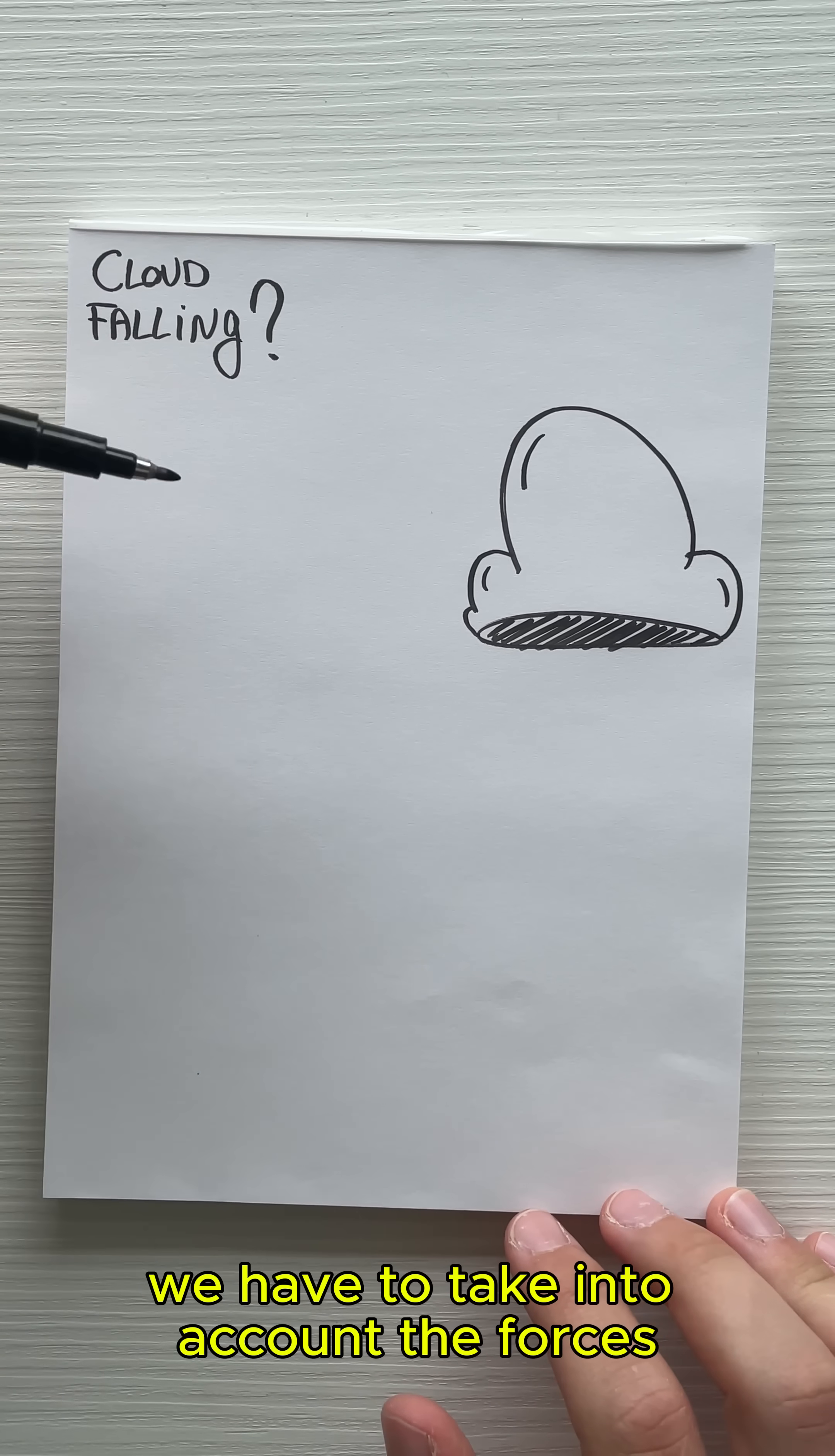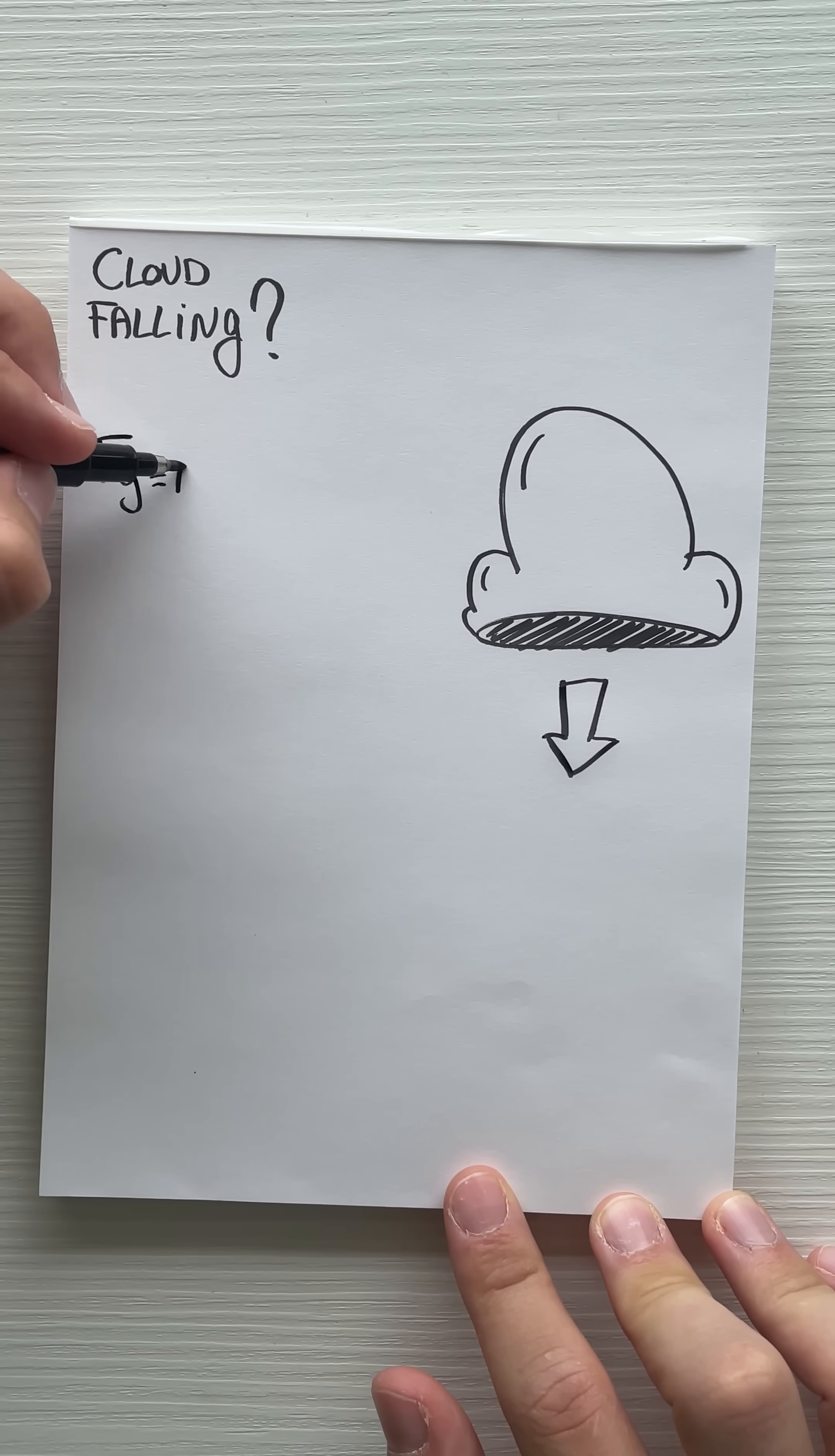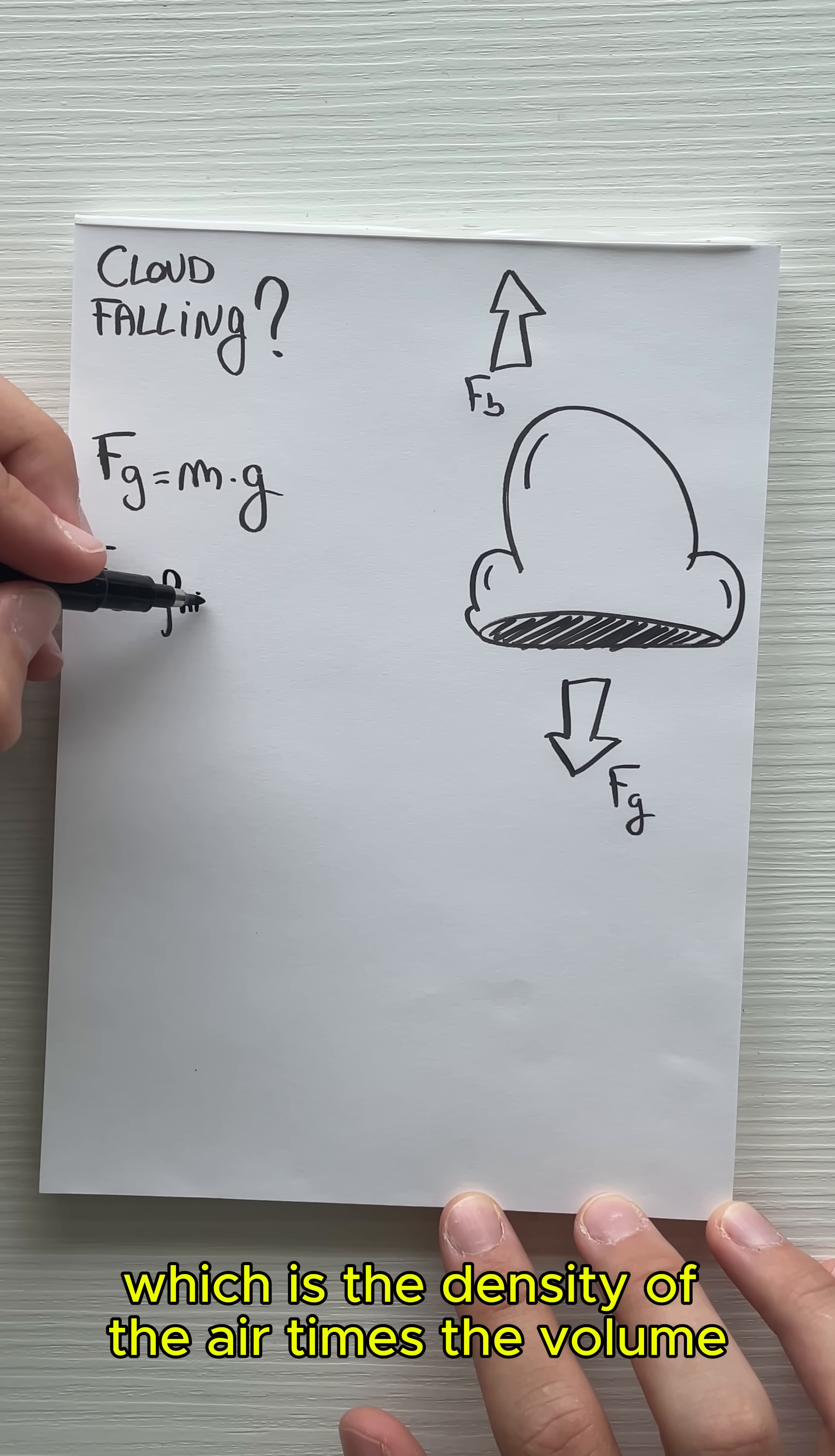First, we have the gravitational force, which is the mass times the gravity. Then we have the buoyant force, which is the density of the air times the volume times the gravity.